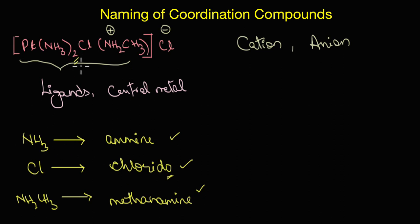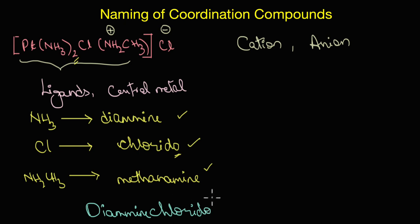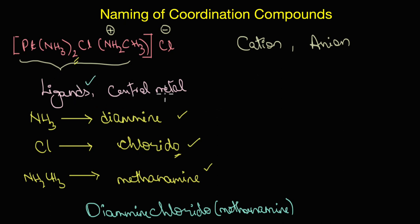There are two ammonia ligands, so the prefix is 'di', giving 'diamine'. There is only one chlorido and one methanamine group. So the ligand portion of the name is 'diaminechloriodo(methanamine)', with methanamine written in brackets.